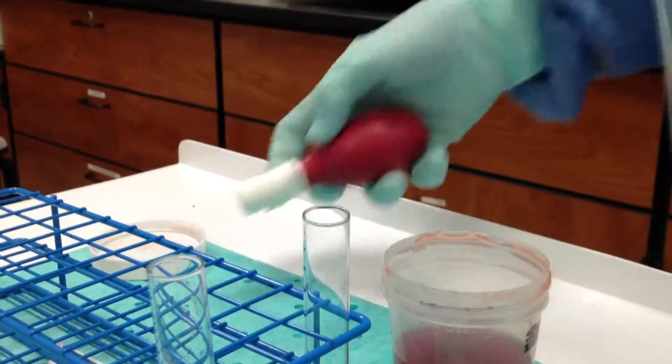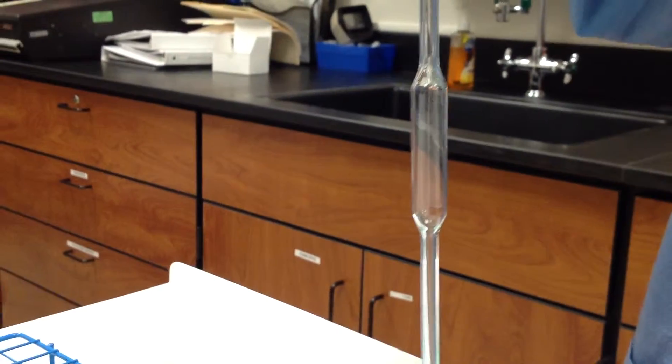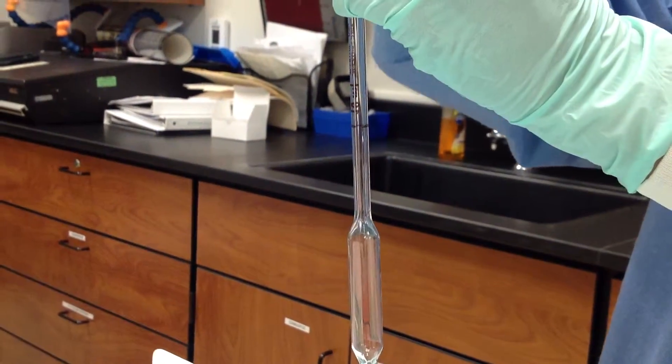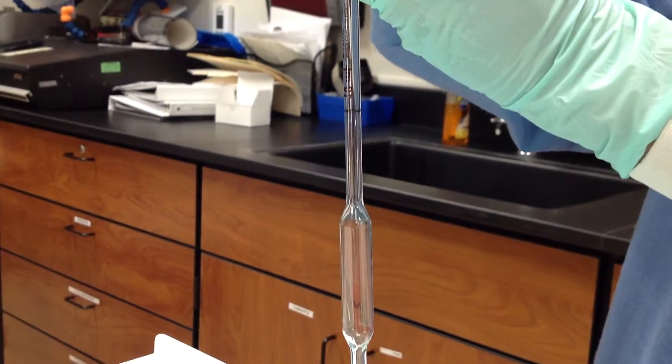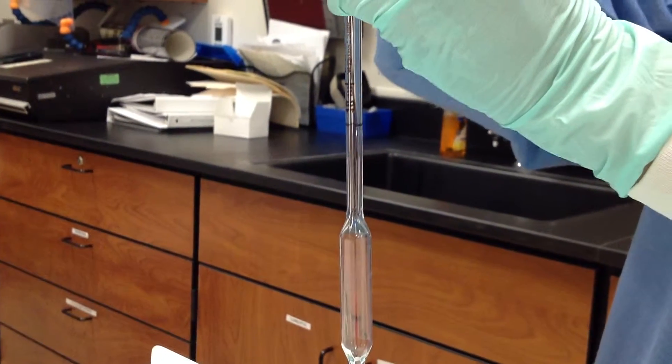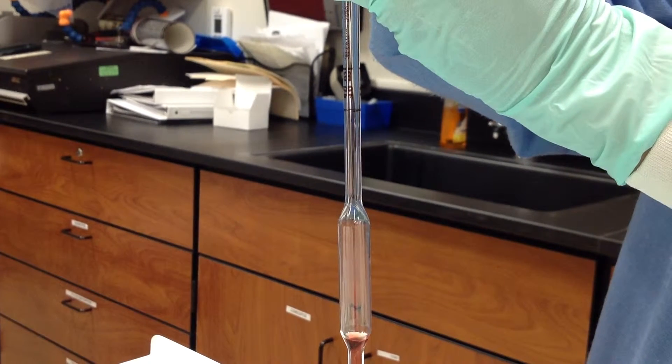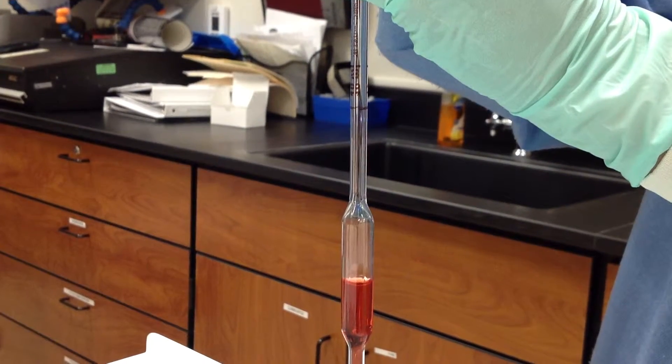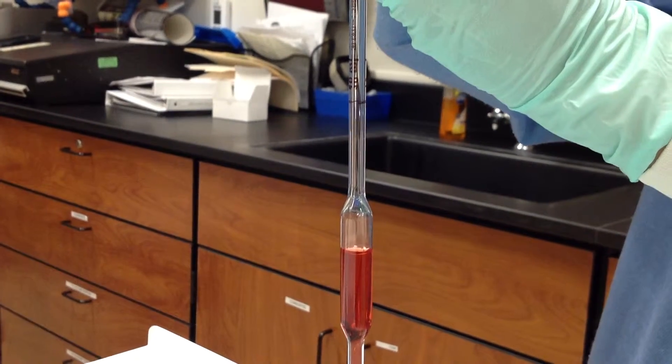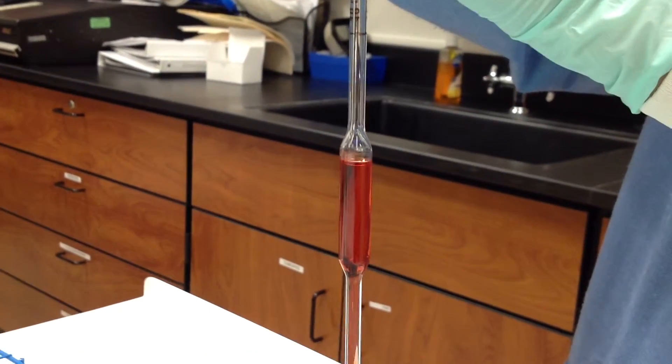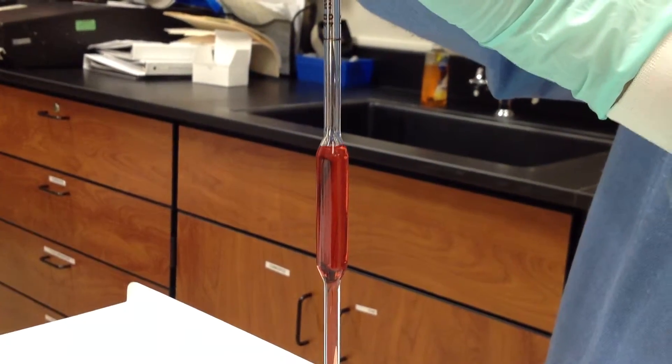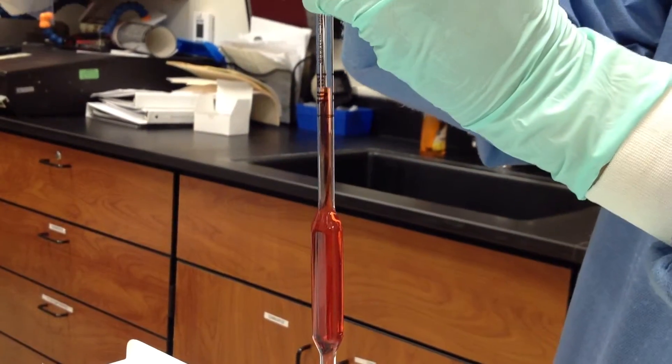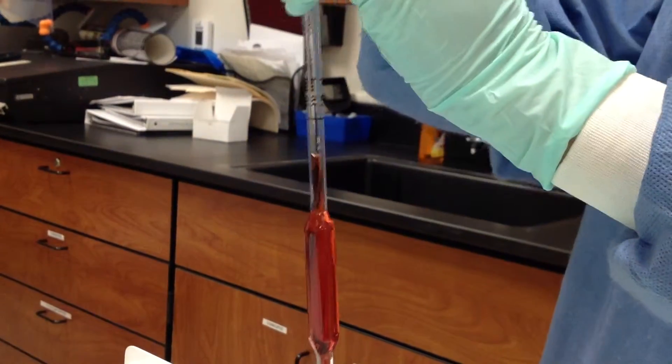The same method applies to the volumetric pipette. You aspirate the solution past the line, wipe the tip off, and then drop it to the line. That begins your zero process. Notice they have a large bulb area that holds the bulk of the solution.